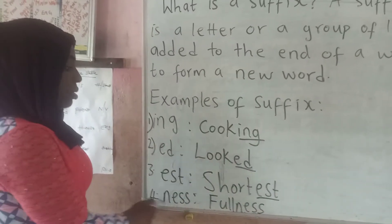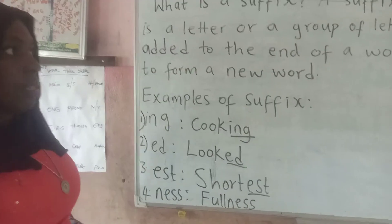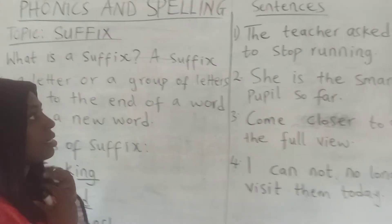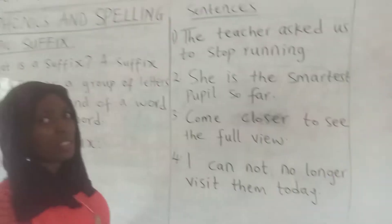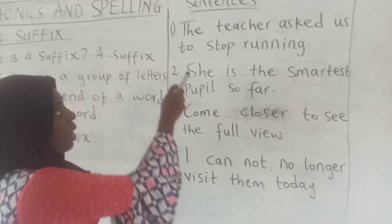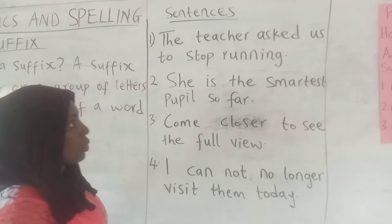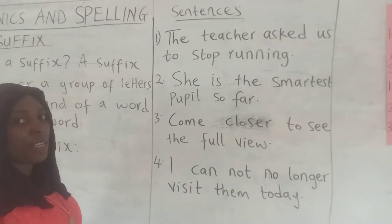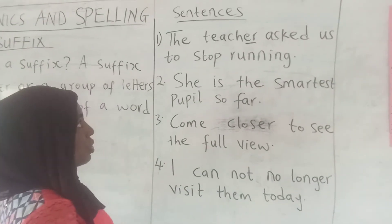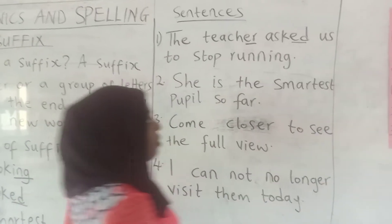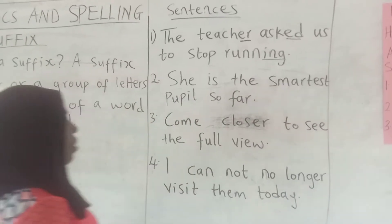'ness' is another suffix. When we add 'ness' to 'full', we get 'fullness'. Now let's quickly look at some sentences with words and try to identify suffixes in these words in the sentences. Number one: 'The teacher asked us to stop running.' I can see 'er' at the end of 'teach' to give me 'teacher'. I can see 'ed' at the end of 'ask' to get 'asked'. And I can see 'ing' at the end of 'run' to get 'running'.